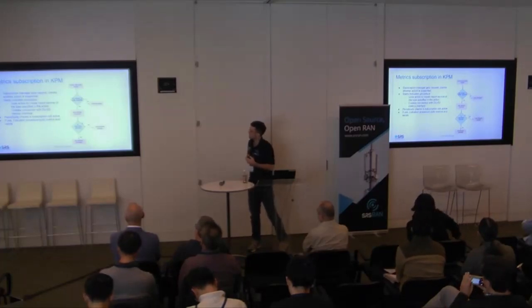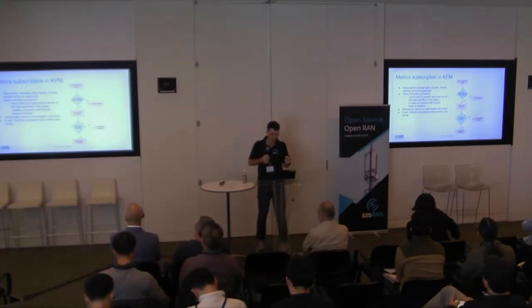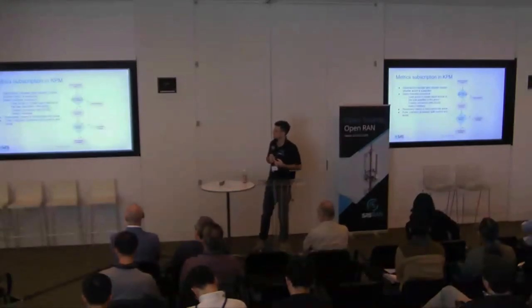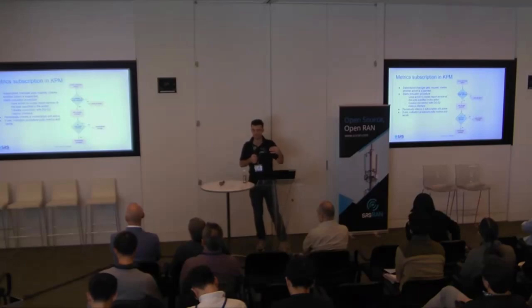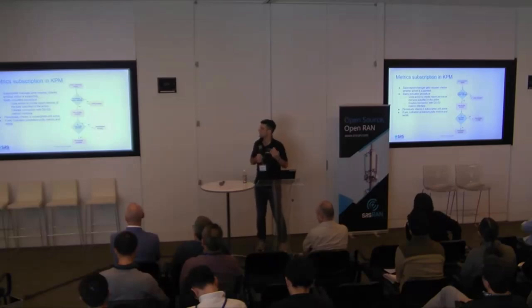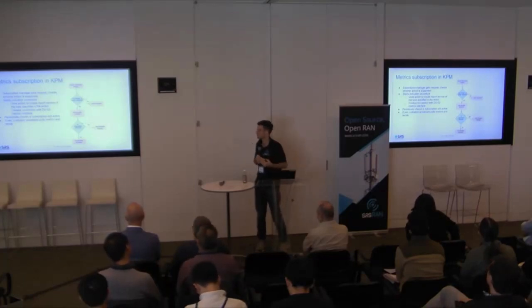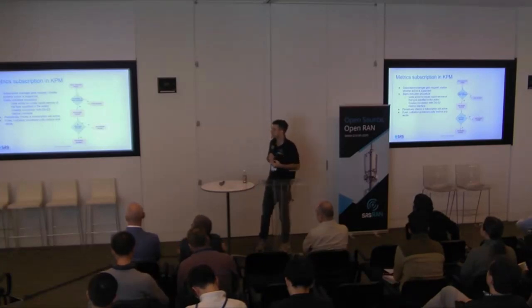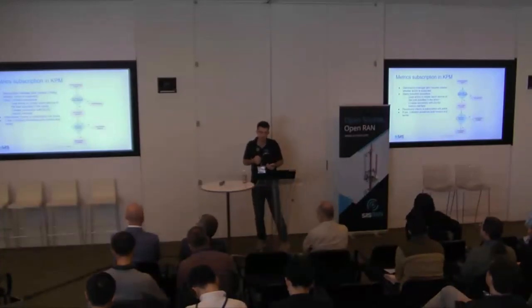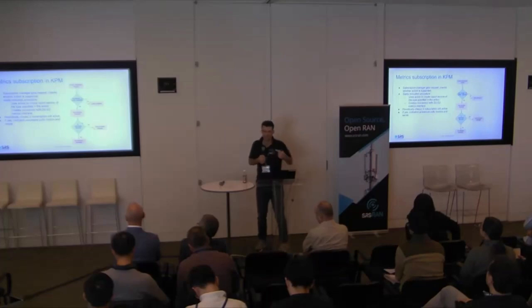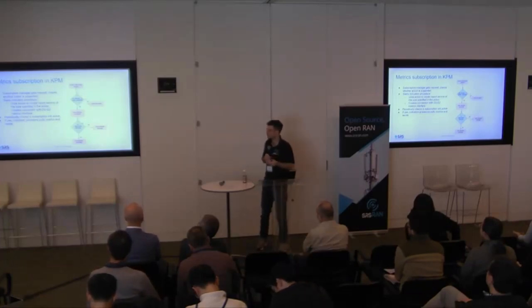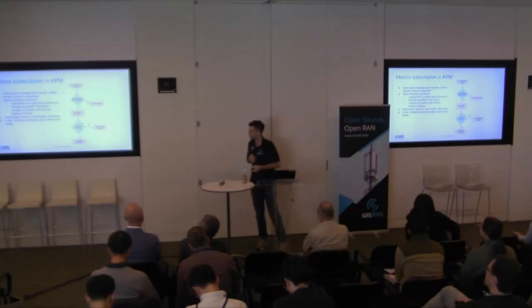Going through this procedure more simply: the subscription request comes in and is sent to the subscription manager, which checks if the particular action is supported. If not, it directly sends a subscription failure. If supported, it starts the indication procedure — a separate procedure managed by the subscription procedure. Based on the action, it sets up the particular report style, instantiating one of the five report styles discussed. The indication procedure then executes every X milliseconds (as low as 10ms, as slow as one second), extracting metrics and reporting to the RIC until a subscription delete request is received or some other ending criteria is met.